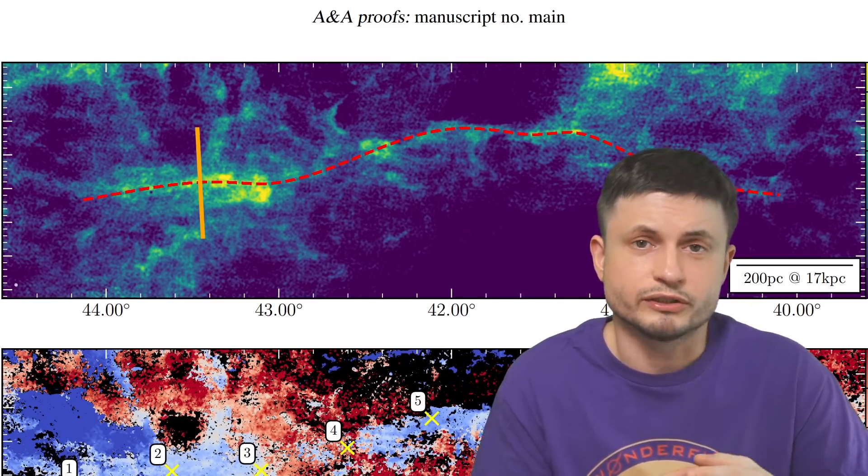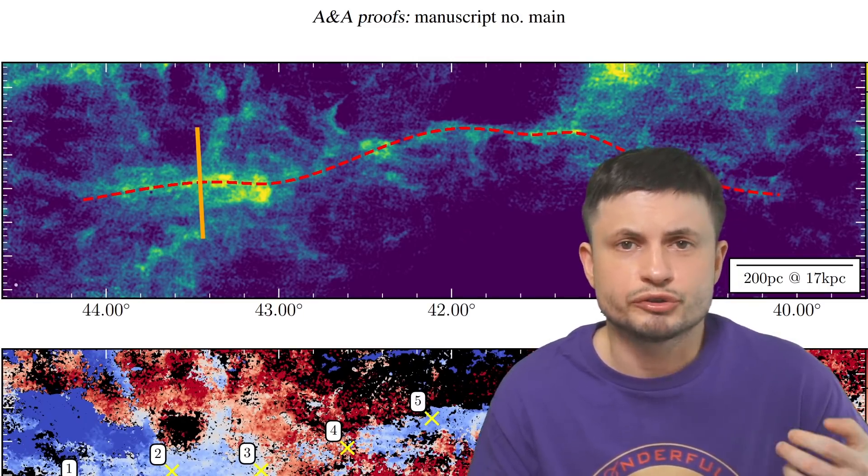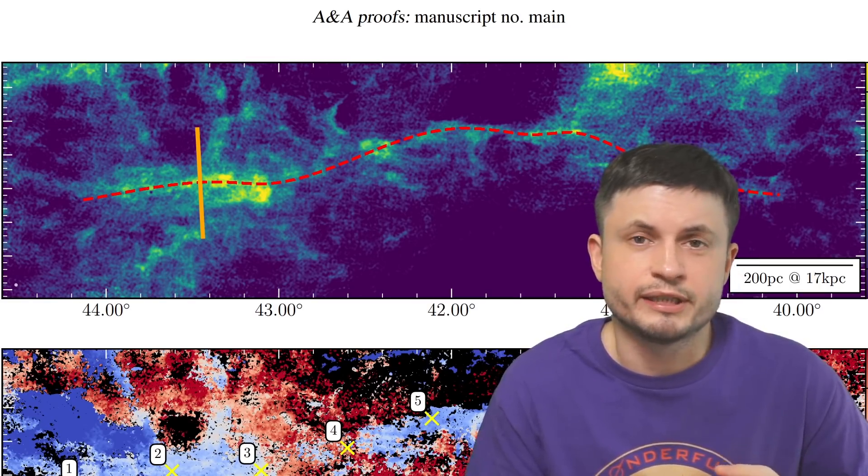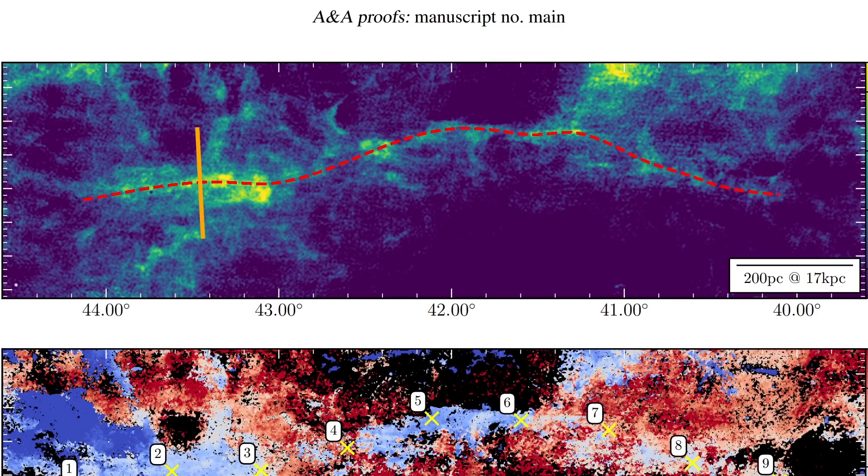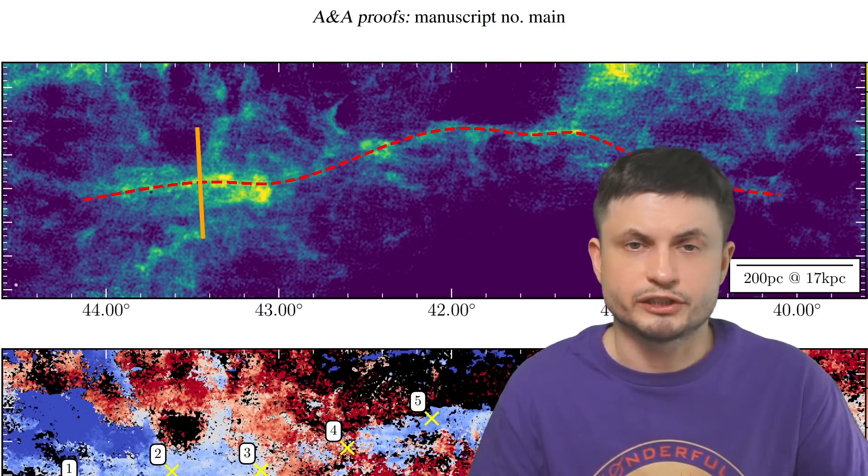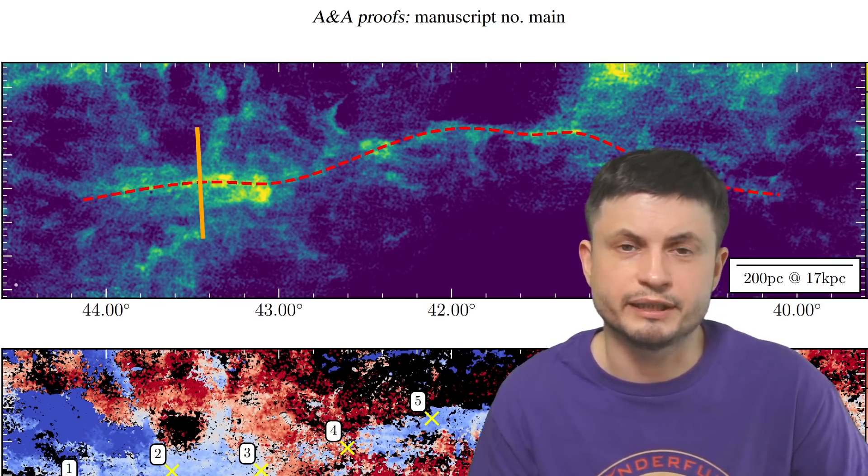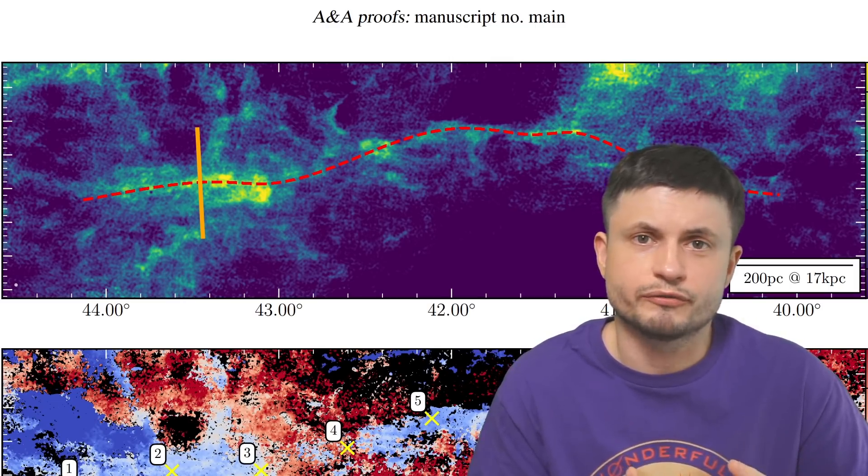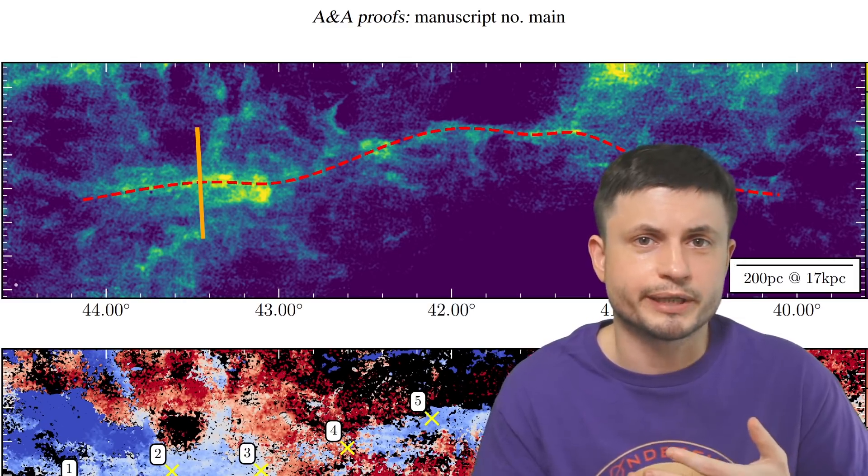And so essentially they discovered this one really long filament that was more or less moving at the same speed, possessed relatively similar properties, similar temperature, and seemed to be moving in the same direction around the galaxy. And because of its location underneath the galactic plane, and because all of this gas also had similar velocity, it sort of stood out from the background of all of the other gas present here.